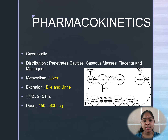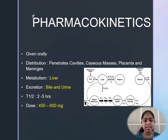The pharmacokinetics of Rifampicin describes its ADME — absorption, distribution, metabolism, and excretion. It is generally given orally and is well absorbed on an empty stomach. It penetrates cavities, caseous masses, placenta, and the meninges. Metabolism occurs in the liver, and excretion is via bile and urine. The half-life is 2 to 5 hours, and a normal dose of 450 to 600 mg is given.